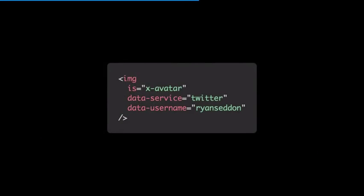Our custom component, x-avatar, would look like this: data-service='twitter', username='ryan', and that would construct the request and set the source for me. Relatively simple.